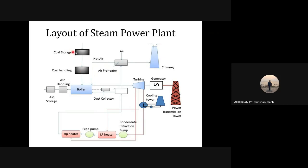In the coal and ash handling circuit, the main circuit includes coal storage and coal handling, while ash storage and ash handling come under the ash circuit. This circuit consists of coal storage, ash storage, coal handling, and ash handling systems.